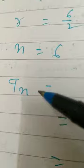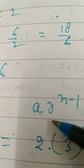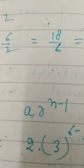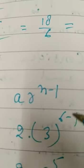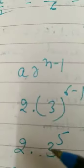You have to calculate the nth term TN. Then apply the formula A times R raised to the power n minus 1. That is A is 2, R is 3, and n is 6. So 2 times 3 to the power 5.